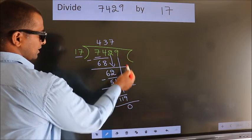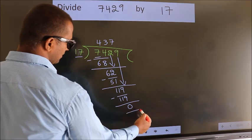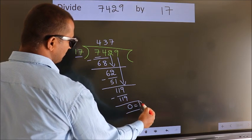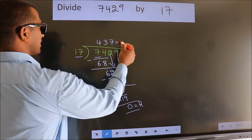No more numbers to bring down. So we stop here. This is our remainder. This is our quotient.